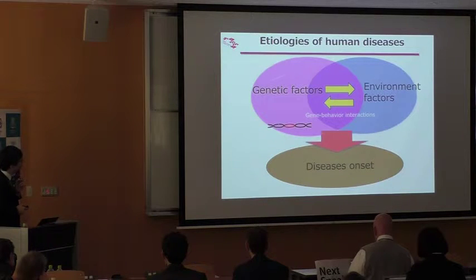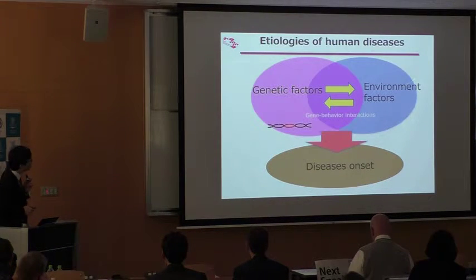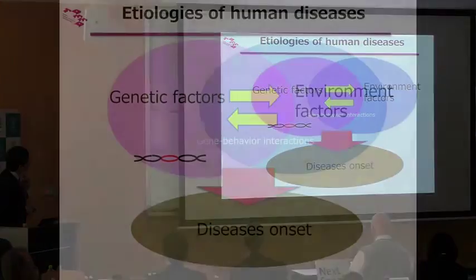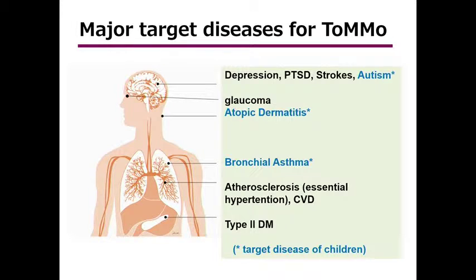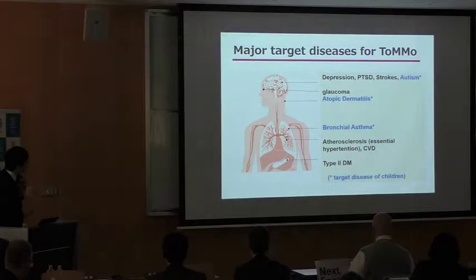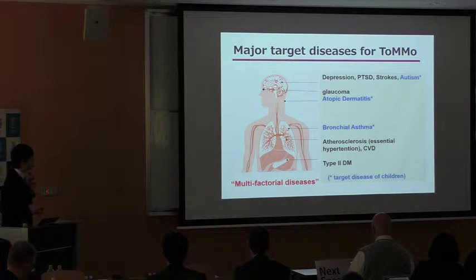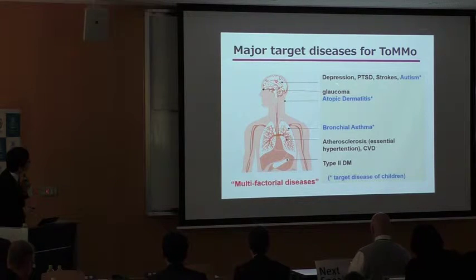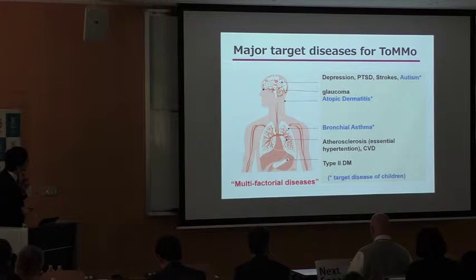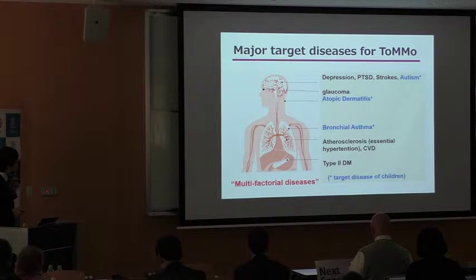As you know, many genetic factors and many environmental factors contribute to disease onset. We consider this relationship because the major target of ToMo is not a Mendelian disorder — all of them are multifactorial diseases. It is very complex: depression, post-traumatic stress disorder, stroke, autism, glaucoma, atopic dermatitis, bronchial asthma, atherosclerosis, cardiovascular disease, and type 2 diabetes.